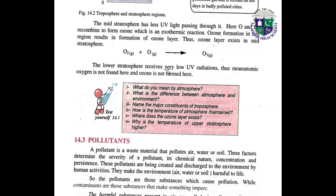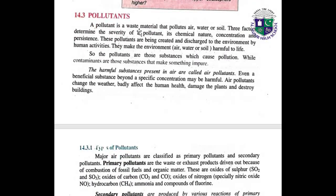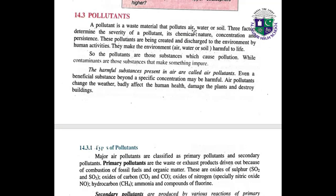What are air pollutants? A pollutant is a waste material that pollutes air, water, or soil. The factors that determine the severity of a pollutant are its chemical nature, concentration, and persistence. These pollutants are created and discharged into the environment by human activities. They make the environment — air, water, or soil — harmful to life.